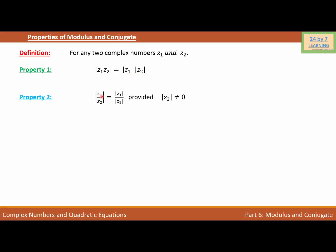Property 2: modulus of Z1 over Z2 is equal to modulus of Z1 over modulus of Z2, provided modulus of Z2 is not equal to 0. Because if the modulus of Z2 is equal to 0, then we cannot find the division of two complex numbers.